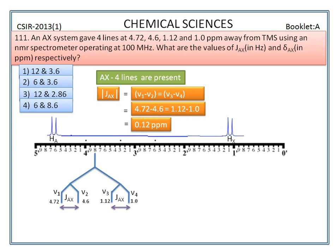JAX value should be in hertz. To convert 0.12 which is in ppm into hertz, we have to multiply 0.12 ppm by operating frequency in megahertz of the NMR spectrometer used for this experiment. Here the operating frequency is 100 megahertz. So we have to multiply the JAX value by 100. We get 12 hertz.